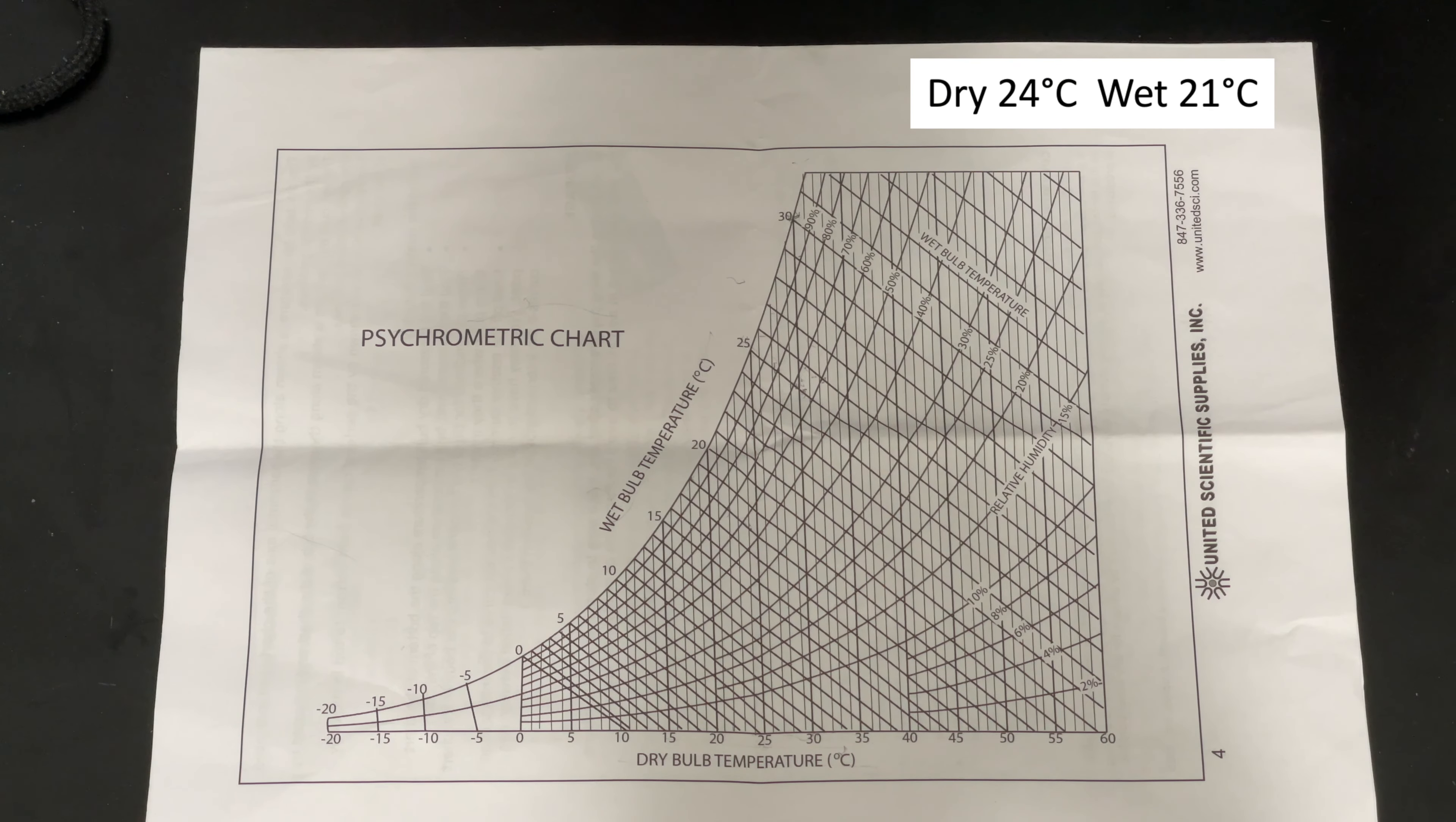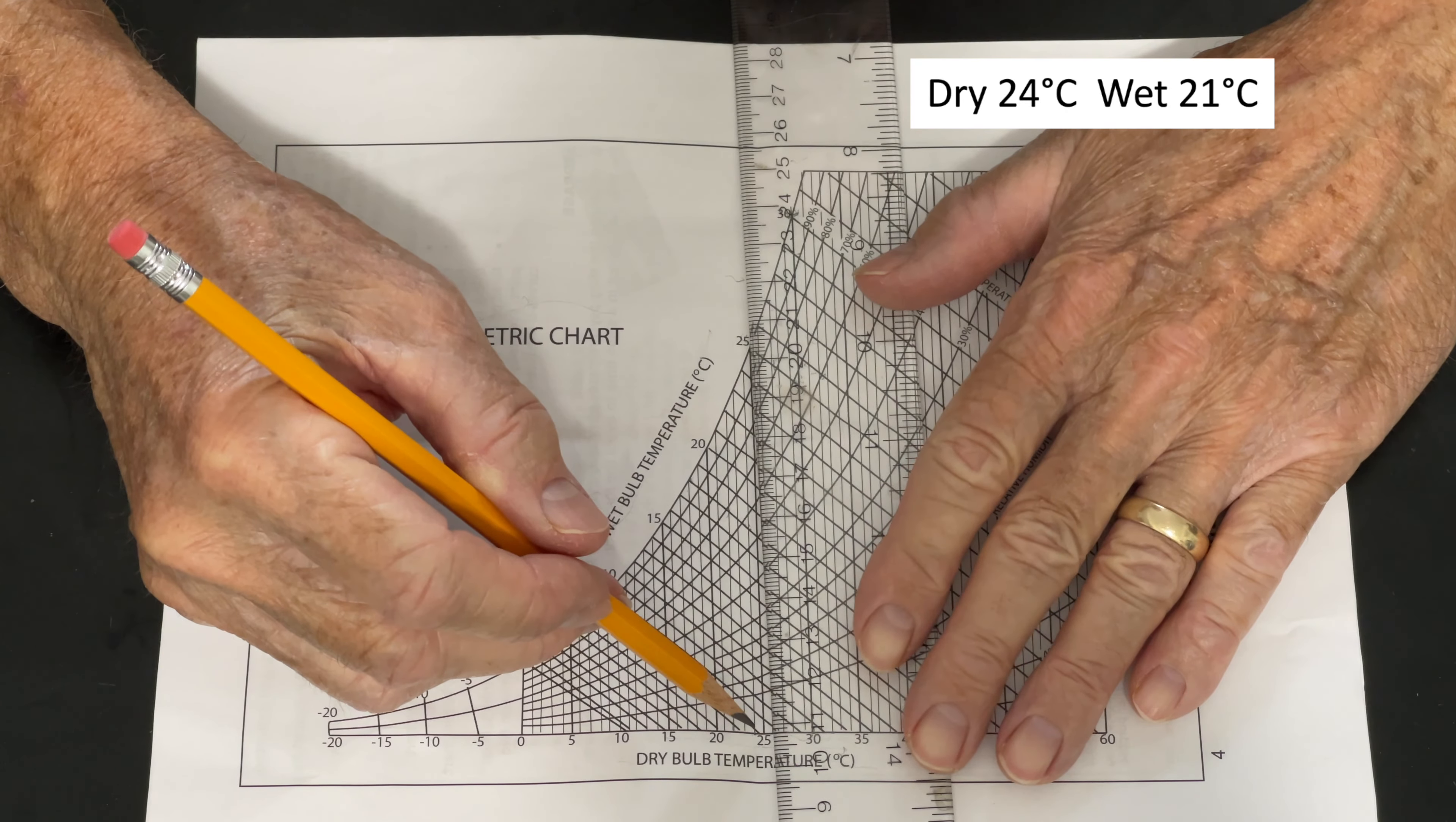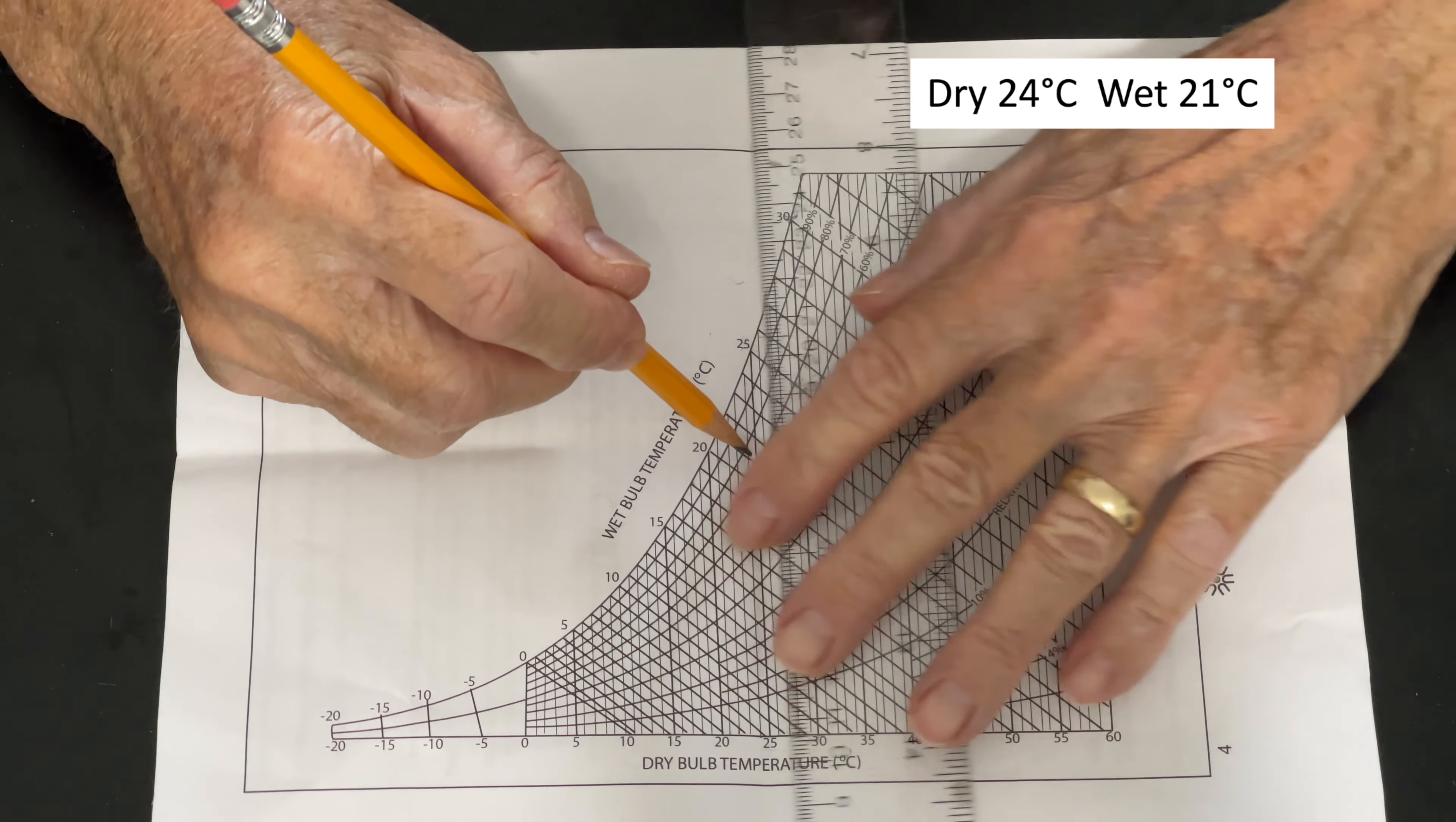We are going to go with 21 degrees on the wet bulb temperature and slightly over 24 on the dry bulb. Now, it is much easier to do this on the psychrometric chart. That is dry bulb temperature, wet bulb. If you have a ruler like this, it helps line things up. So, I am going to set this on a dry bulb temperature of slightly higher than 24. And our wet bulb temperature was 21. Let's see if we can find it here. This is 15, 20, that is 21 right there. So, 21 line comes over here.